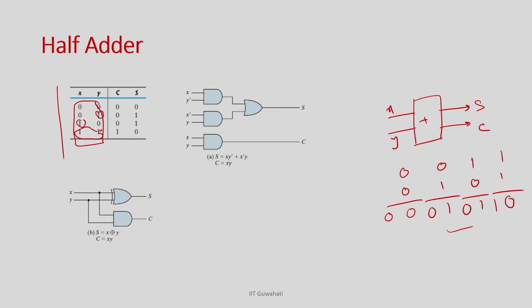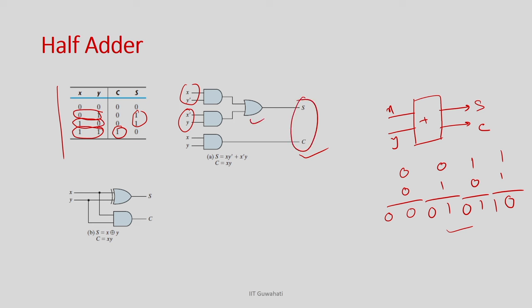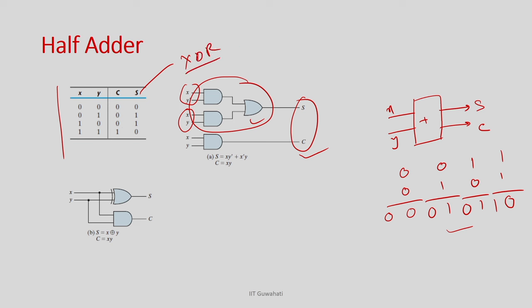If I draw the circuit corresponding to this truth table, I can use an AND gate for carry (x·y) and the sum is the XOR of x and y — covering cases x̄y and xȳ followed by an OR. I can have an optimized design: instead of 3 gates for the sum (2 AND gates and 1 OR gate), the sum S is nothing but XOR.